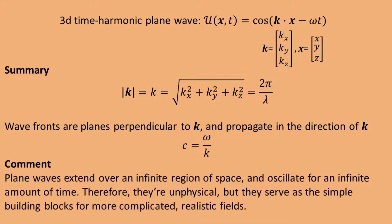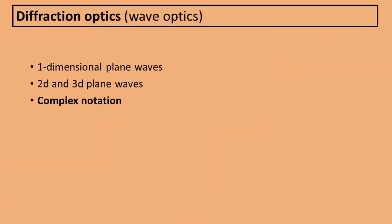We've spent lots of time discussing plane waves, but actually they are unphysical because they extend over an infinite region of space and oscillate infinitely long. So why do we even bother with them? This is because sometimes they serve as a good approximation to an actual field, but more importantly, they serve as the mathematically simple building blocks with which we can construct and understand more complicated realistic fields, as we will see later when discussing the angular spectrum method. Before we do that, let's first introduce a more convenient way to describe time harmonic fields using complex notation.